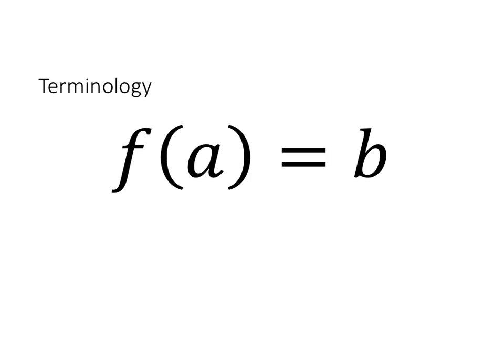There are three components to function notation. The first part here, f, tells us the name of the function. So this is our function name.